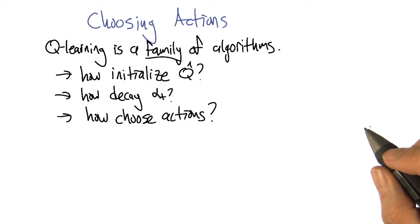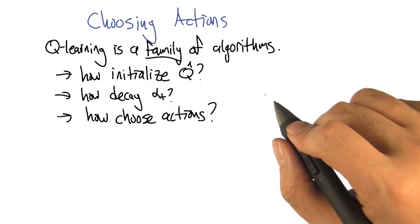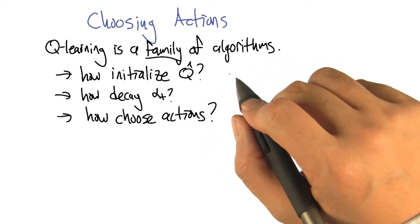So Charles, I kind of cheated. Oh, tell me more. So, Q-learning isn't really an algorithm. Q-learning is actually a family of algorithms. There's lots of different reinforcement learning algorithms, specific reinforcement learning algorithms, that can be reasonably called Q-learning.